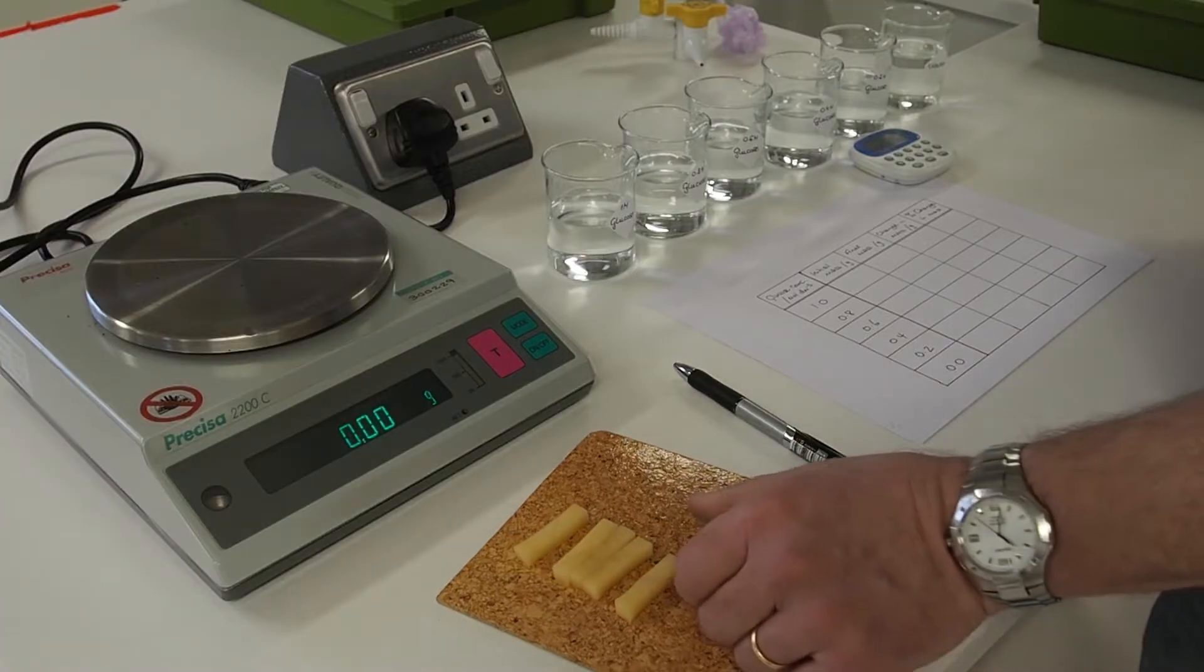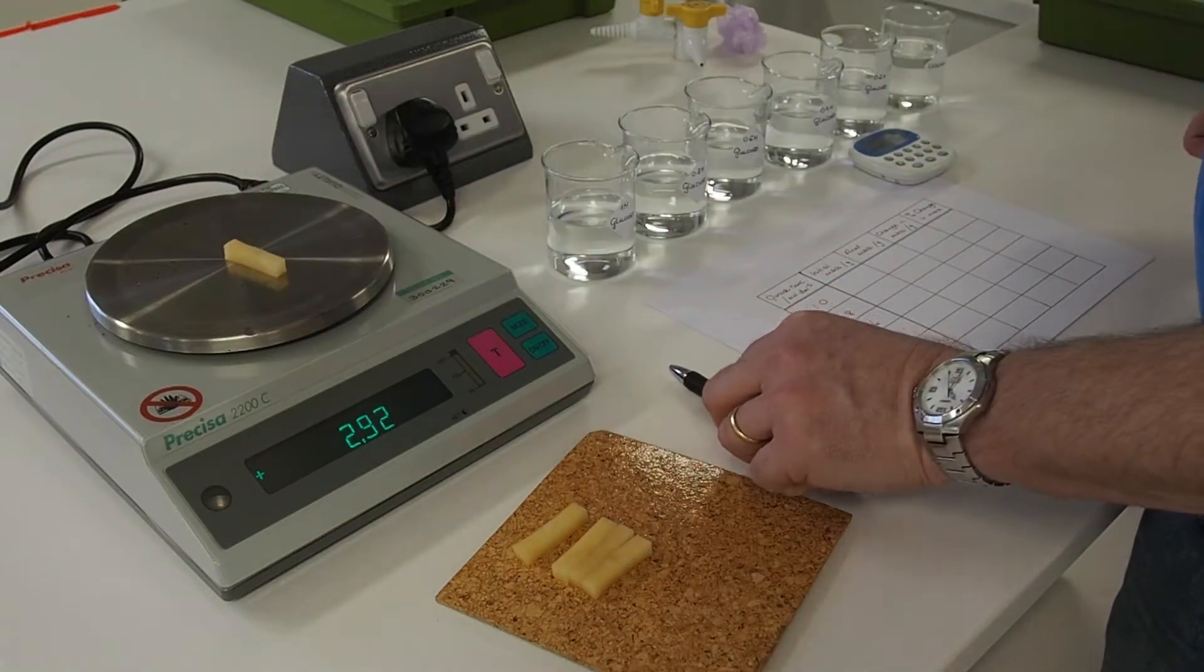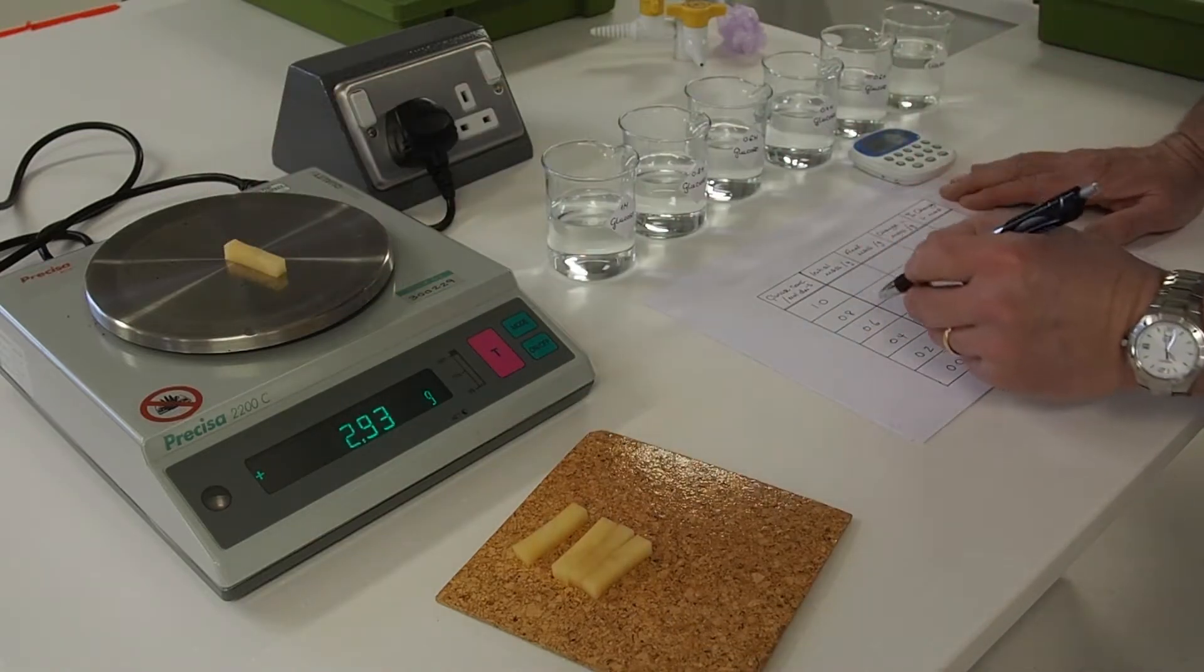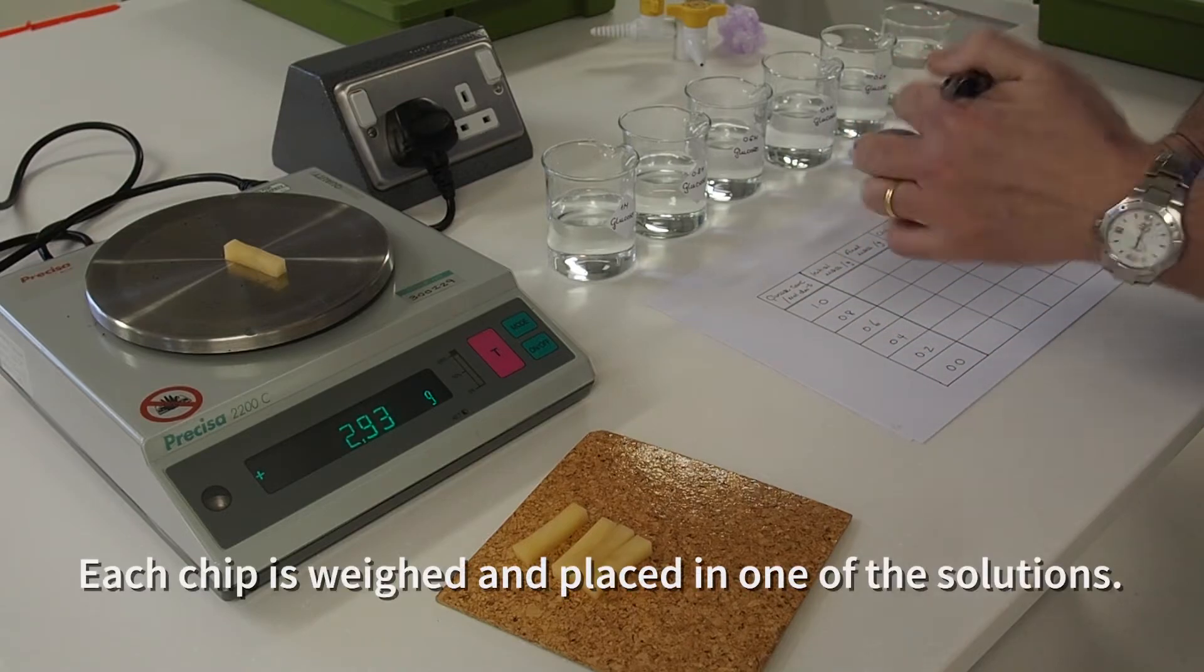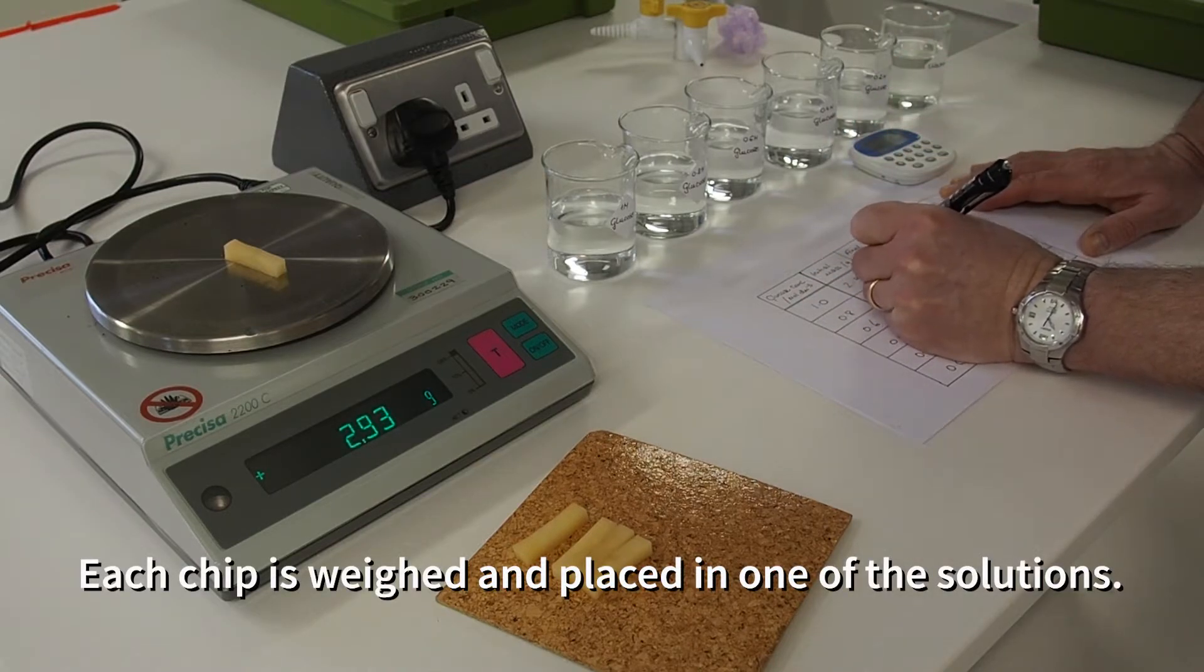Now using a mass balance we determine the mass of each individual potato piece and record it in a data table, and then the piece goes into one of the different glucose solutions.